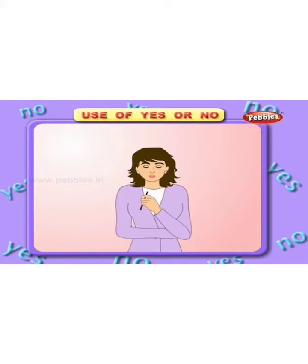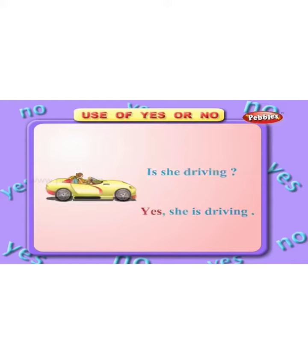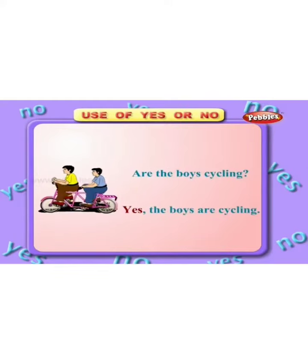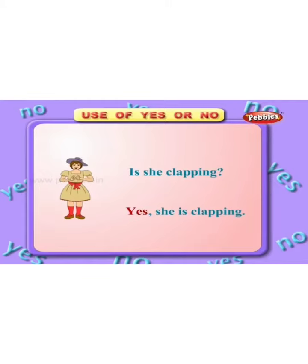Is she driving? Yes, she is driving. Are the boys cycling? Yes, the boys are cycling. Is she clapping? Yes, she is clapping. Is the boy writing? No, he's not writing.